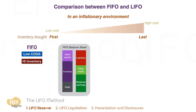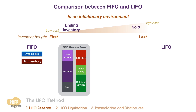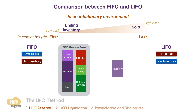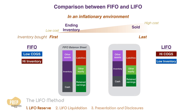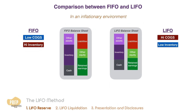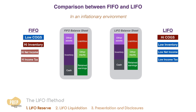Conversely, under LIFO, the goods sold are of higher cost and the ending inventory are of lower cost. Hence, the cost of goods sold in the income statement is higher while the inventory value on the balance sheet is lower. All this means that the net income and income taxes reported under LIFO is lower than when it is under FIFO.